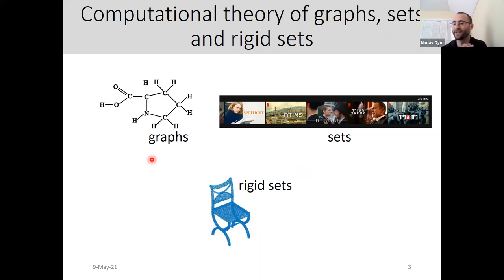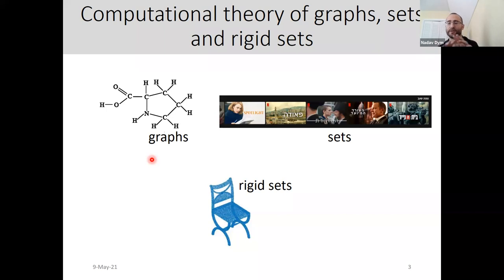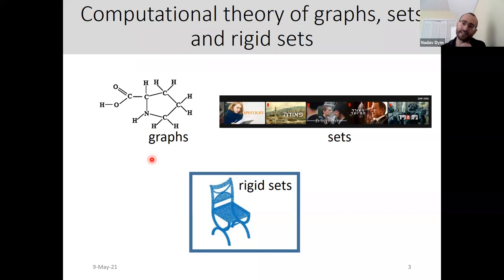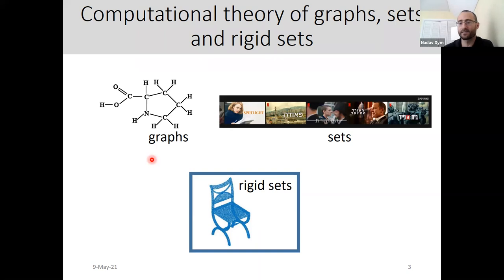I'm going to be talking about the computational aspects of this. Kids age five and up can understand the concept of different objects being the same because of a symmetry group, but it poses certain computational challenges. If the most basic thing we know how to do in computers is compare Euclidean vectors or compute their distance, once you add a symmetry group, things can get complicated. The picture I want to talk about is how rigid sets are in the middle between graphs and sets.